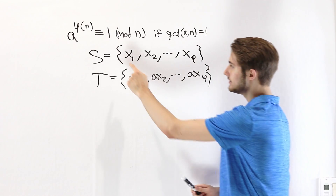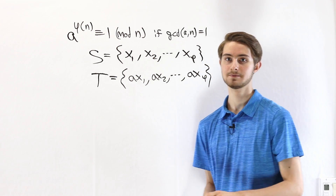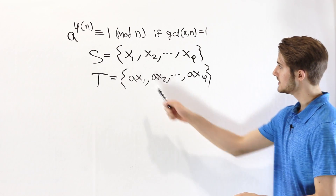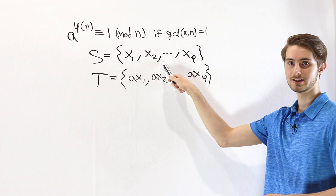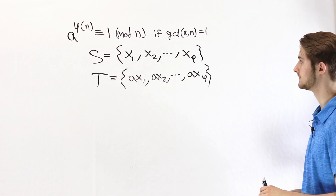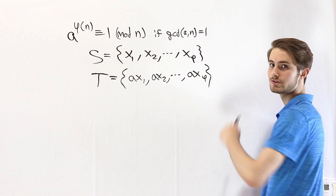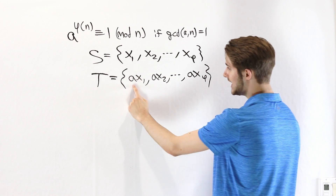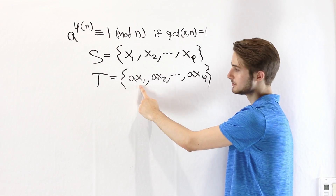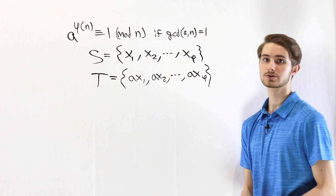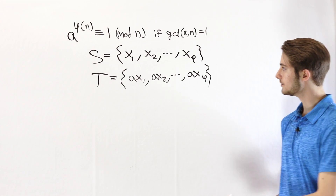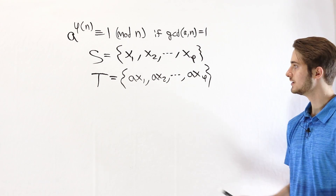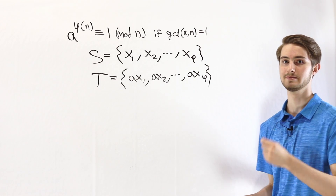We want to look at a few properties of how these two sets are related. Remember that all of the xᵢ's are coprime to n by definition, and we also know that a is coprime to n. One of the properties of coprime numbers is that if a is coprime to n and x₁ is coprime to n, then their product is also coprime to n. So ax₁, ax₂, and so on up to ax_φ are all coprime to n.